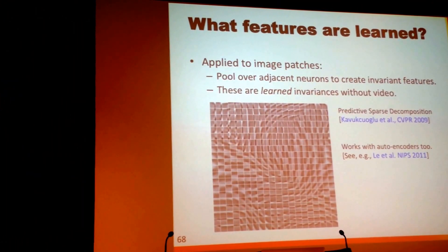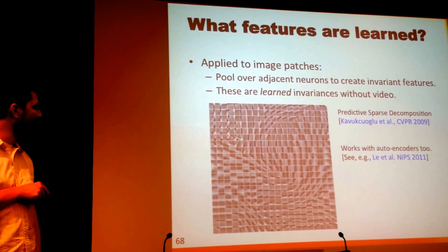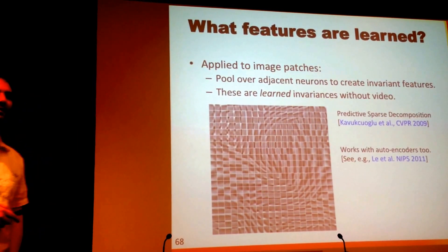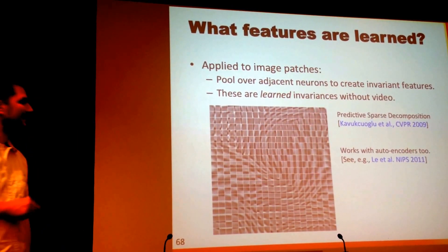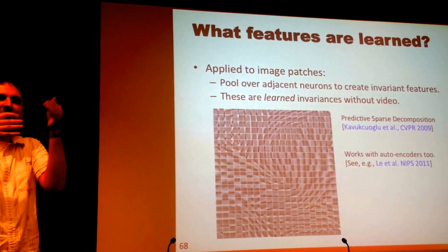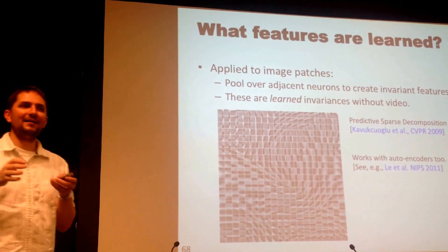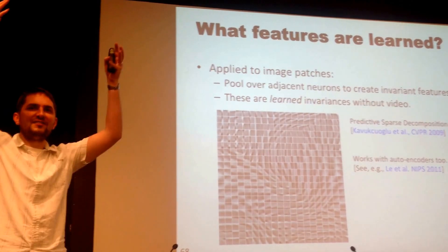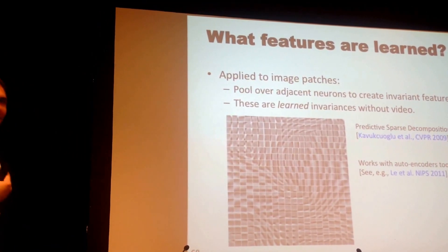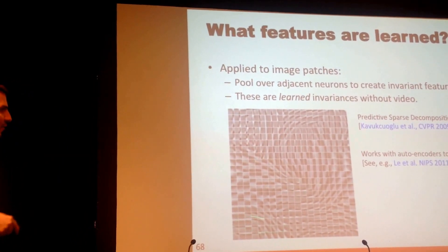What ends up happening is that as a result of defining groups that are little square regions in a grid, this algorithm figures out that to make groups sparse, it should put similar features with each other, because similar features — like edges that are nearby — are all going to turn on together and turn off together. So if you want to find features that minimize those objectives, it turns out that this is the way to organize them.